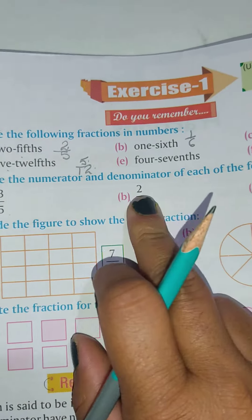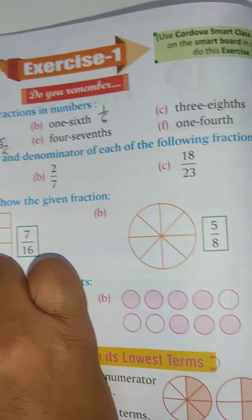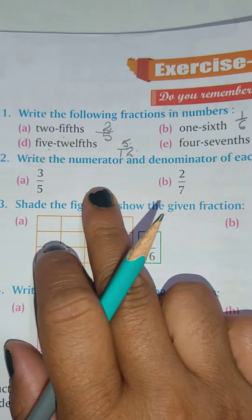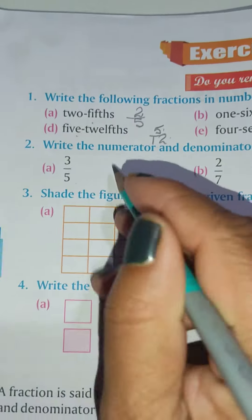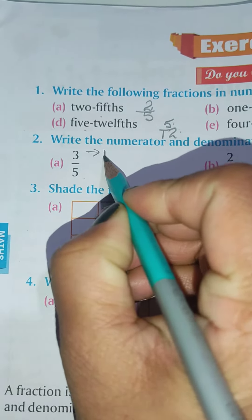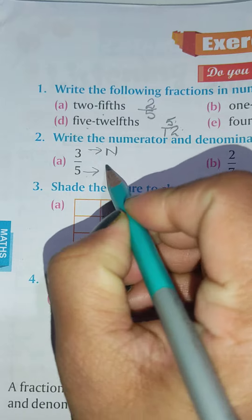Now write the numerator and denominator of each of the following. This I will not do because I know you people know how to do it. You can write down directly N and D.